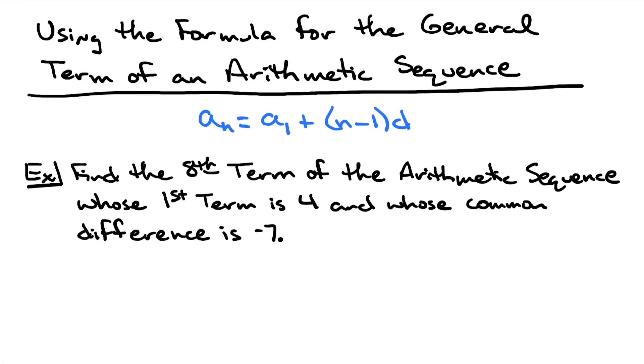In this video we're going to be finding the nth term of an arithmetic sequence using the general term formula. Here's the formula, so you're going to need to have that memorized. Your d is going to be your common difference, and your a sub 1 is going to be your first term.